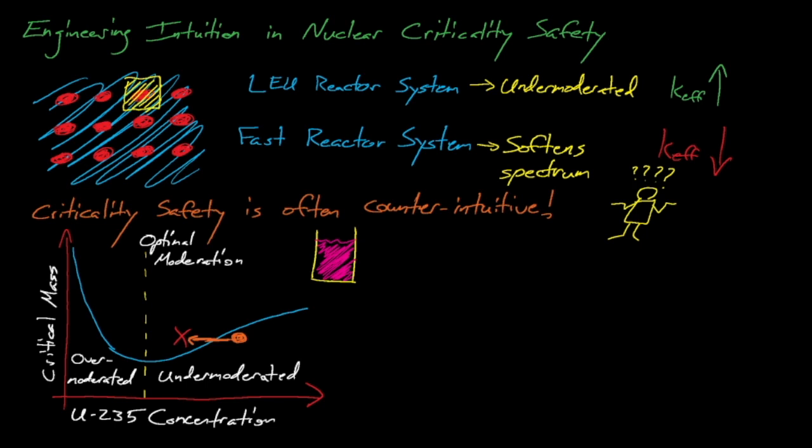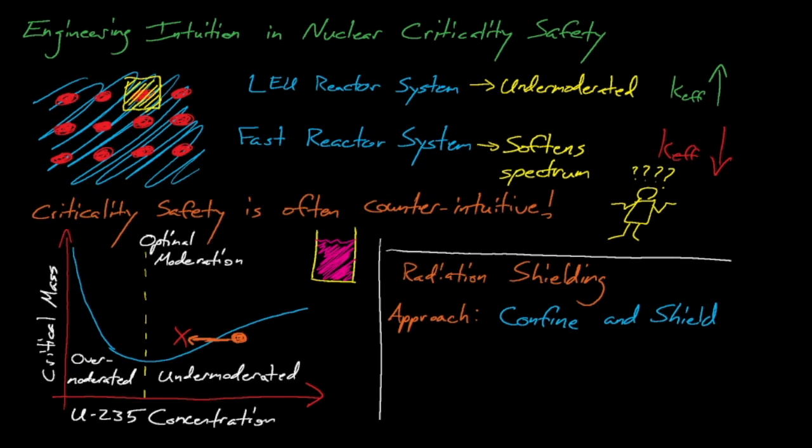Thinking of other fields, let's say that we have a new analyst who transfers in who previously worked in radiation shielding before moving into criticality safety. In radiation shielding, our modus operandi is to confine a radiation source so that it's contained in a limited area, and then to add shielding around it to protect people from the radiation that it emits.